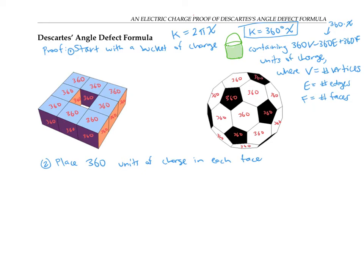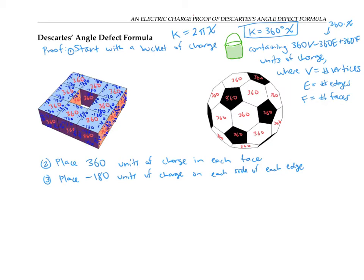Again, there are a lot of faces we can't see. Next, I'm going to place negative 180 units of charge on each side of each edge. So I'll put negative 180 on this side of this edge, negative 180 on that side, and so on — negative 180 on each side of each edge. There are also negative 180s on parts of the square torus that we can't see. I could do the same thing for the soccer ball picture.